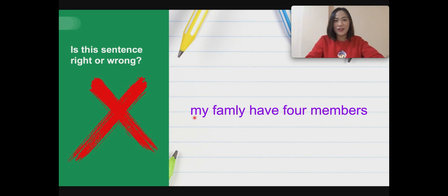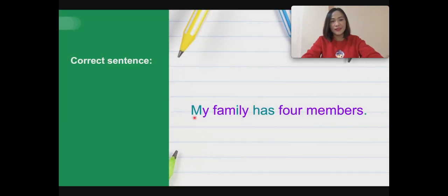Okay, so let's look at the correct sentence. Right. Now, this is the correct sentence: My family has four members. Capitalization, spelling, grammar, and punctuation. Great job. Let's look at the next one.